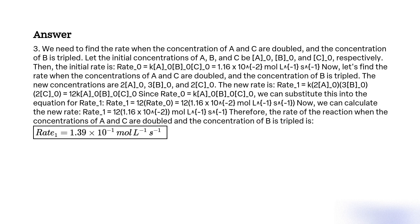We can now calculate the new rate: Rate1 = 12 × 1.16 × 10⁻² mol L⁻¹ s⁻¹. Therefore, the rate of the reaction when the concentrations of A and C are doubled and the concentration of B is tripled is Rate1 = 1.39 × 10⁻¹ mol L⁻¹ s⁻¹.